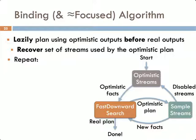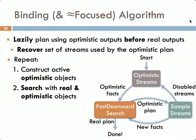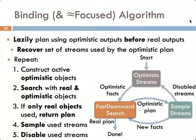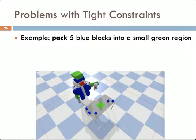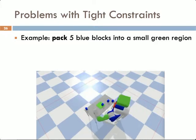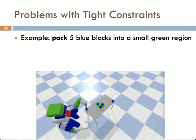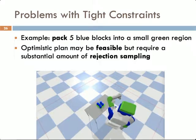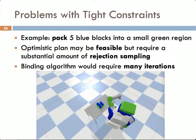The binding algorithm lazily plans using optimistic output values before actually querying any streams to produce real values. Once we plan using these optimistic values, we can recover the streams that could actually produce bindings to these placeholders. The algorithm operates as follows: first it constructs optimistic objects, then performs a search over the combined set of real and optimistic objects. If it finds a plan with only real objects, it returns the plan; otherwise, it samples the streams associated with objects on the plan and disables these streams to ensure a different plan is produced on the next iteration. However, this algorithm has challenges with tightly constrained problems — for example, packing five blue objects into a tiny green region where few placements are collectively collision-free. The optimistic plan may initially appear feasible but require substantial rejection sampling, causing the binding algorithm to revisit the same plan many times before finding a solution.